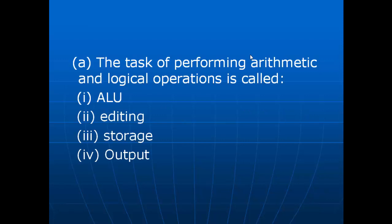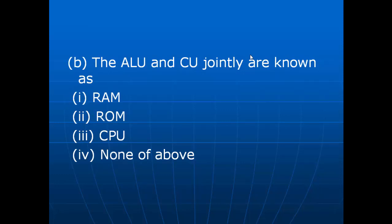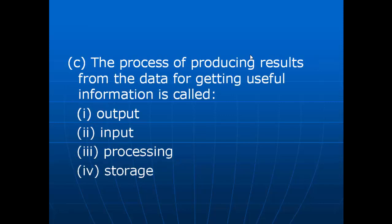Now, choose the correct answers. Question 1: The task of performing arithmetic and logical operations is called — ALU, editing, storage, or output? The correct answer is ALU. Question 2: The ALU and CU jointly are known as — RAM, ROM, CPU, or none of these? The correct answer is CPU. Question 3: The process of producing results from data for getting useful information is called — output, input, processing, or storage? The correct answer is output.